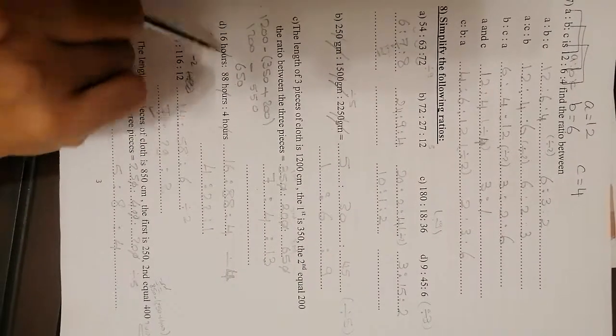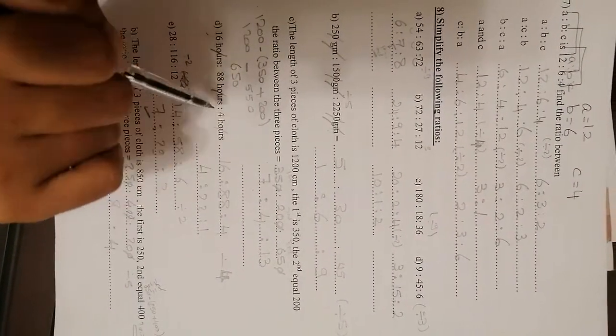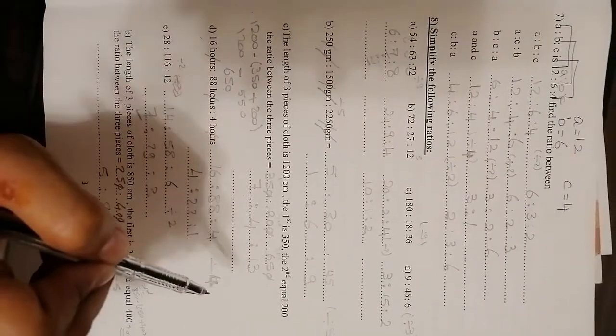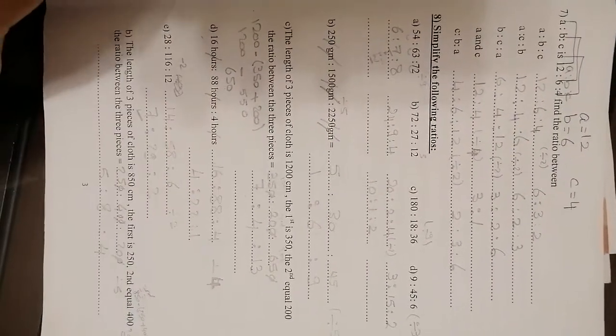Here, also 16 hours, 88 hours, 4 hours. You are going to cross the units. Then 16, 88 to 4. All of them are divisible by 4. Then you will bring the answer.